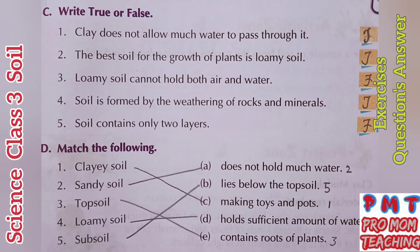True or false. First: clay does not allow much water to pass through it — true, clay absorbs lots of water. Second: the best soil for the growth of plants is loamy soil — true. Next: loamy soil cannot hold both air and water — false, because loamy soil can hold enough air and water.